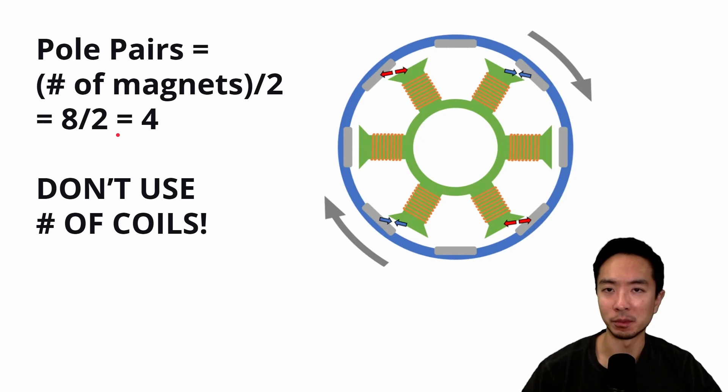So one comment on the terminology. Here the number four means pole pairs, right? The eight here means the number of poles. So depending on what type of motor controller you're doing, sometimes they'll ask for poles or pole pairs. So don't confuse the two.